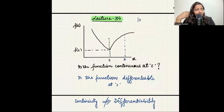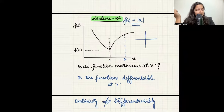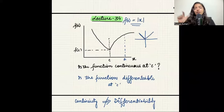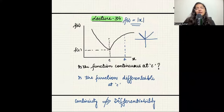For example, consider f(x) = |x|. Is this differentiable at x = 0? If you draw its graph, it forms a V-shape. At every point except the origin, it is differentiable. But at x = 0, there is a corner, so it is not differentiable there. When you approach from the left, the tangent goes one way; from the right, the tangent is different.